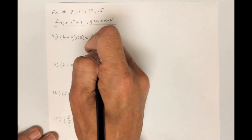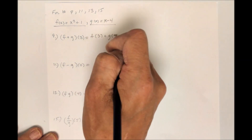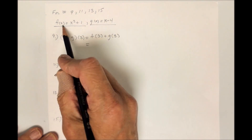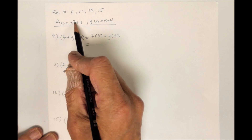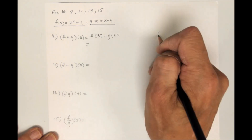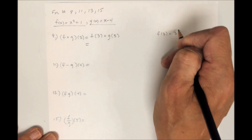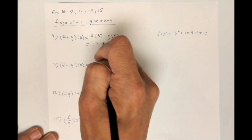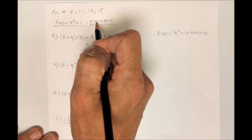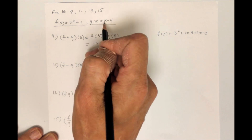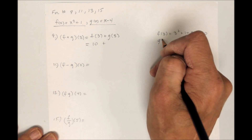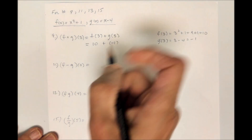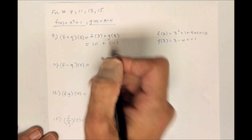By definition, f plus g of 3 is f of 3 plus g of 3. To figure out f of 3, you're going to plug 3 into the rule for f. So f of 3 would be 3 squared plus 1, which is 9 plus 1, which is 10. Plus g of 3: you're going to plug 3 into the rule for g, so g of 3 is 3 minus 4, which is negative 1.